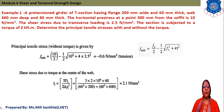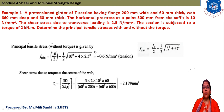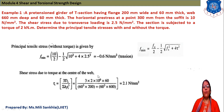Determine the principal tensile stresses with and without torque. The equation for principal tensile stress without torque is: F_min = Fx/2 − (1/2)√(Fx² + 4τ²). Here Fx = 10 N/mm² (given) and τ = 2.5 N/mm² (shear stress due to transverse loading). The answer is −0.6 N/mm², which is negative and therefore considered as tension.